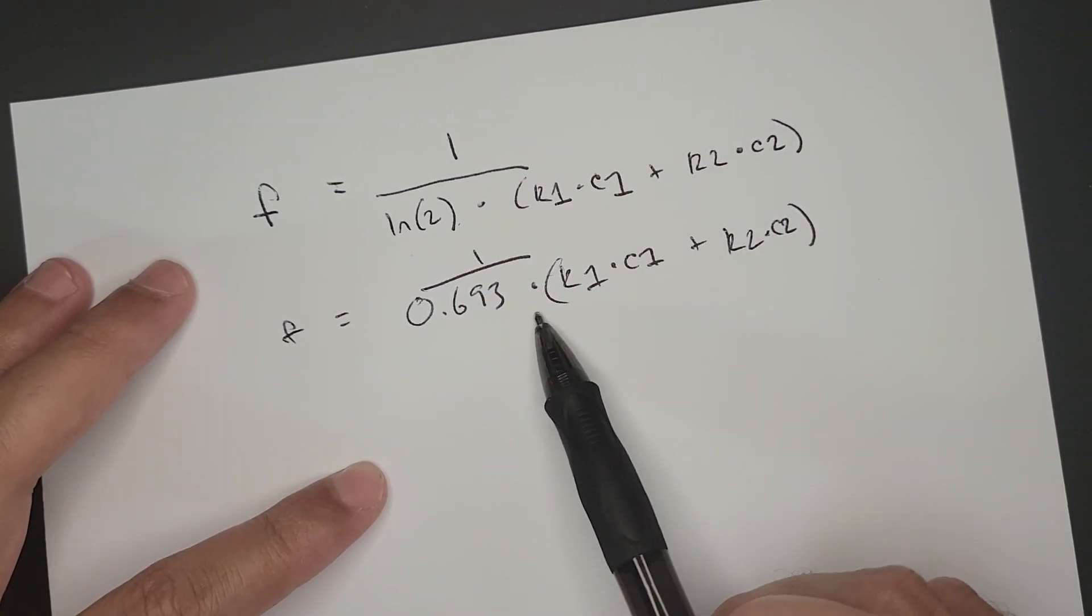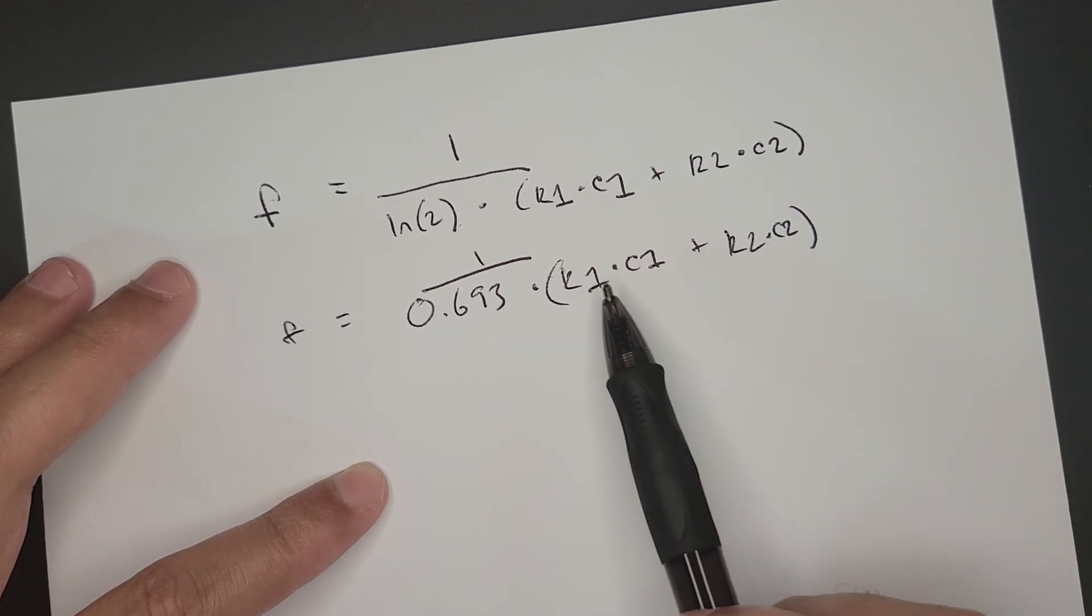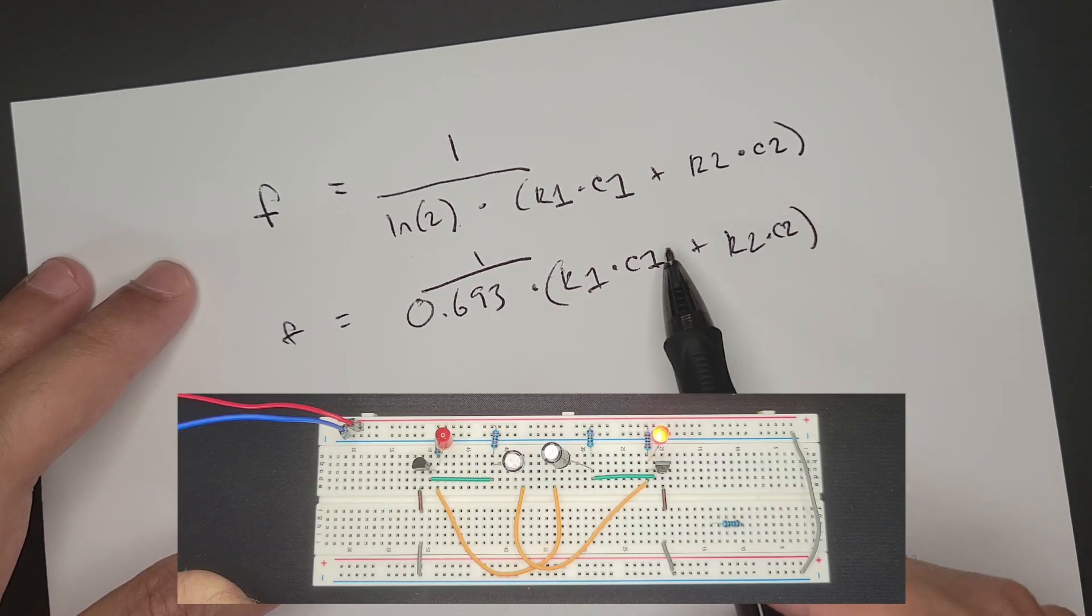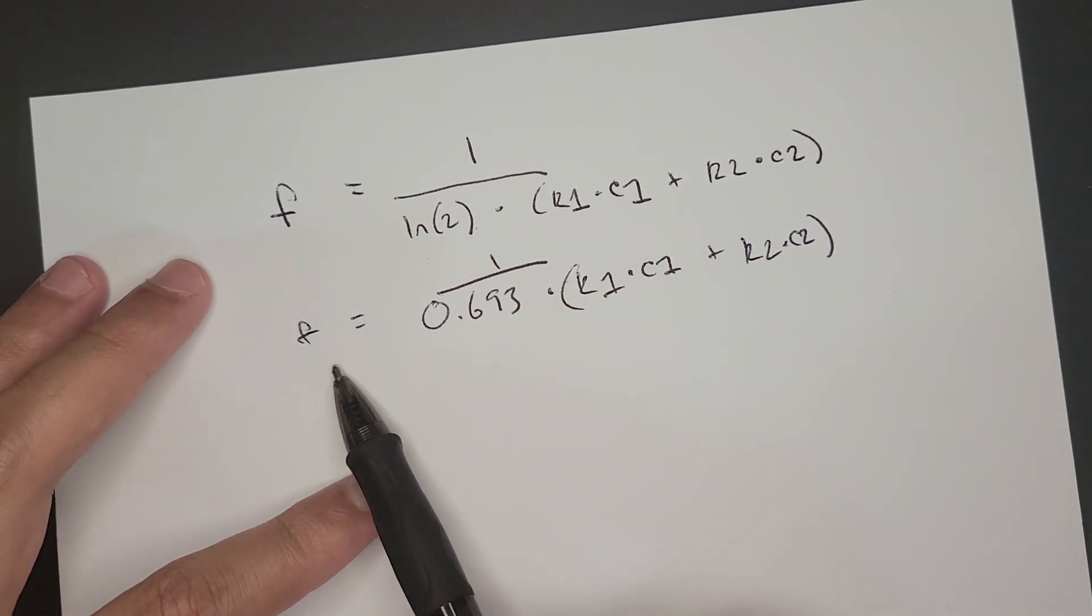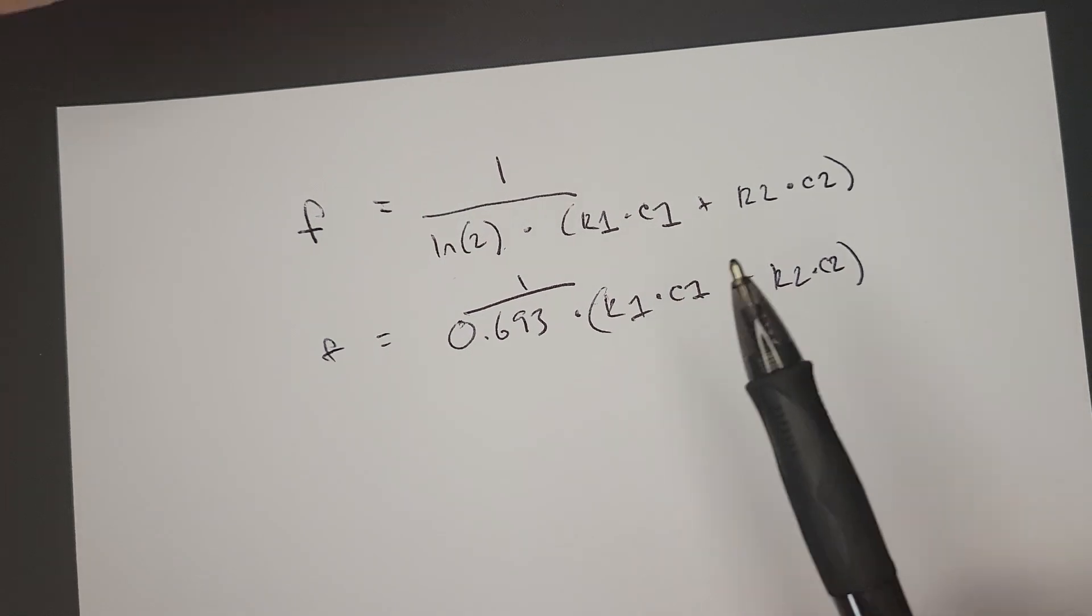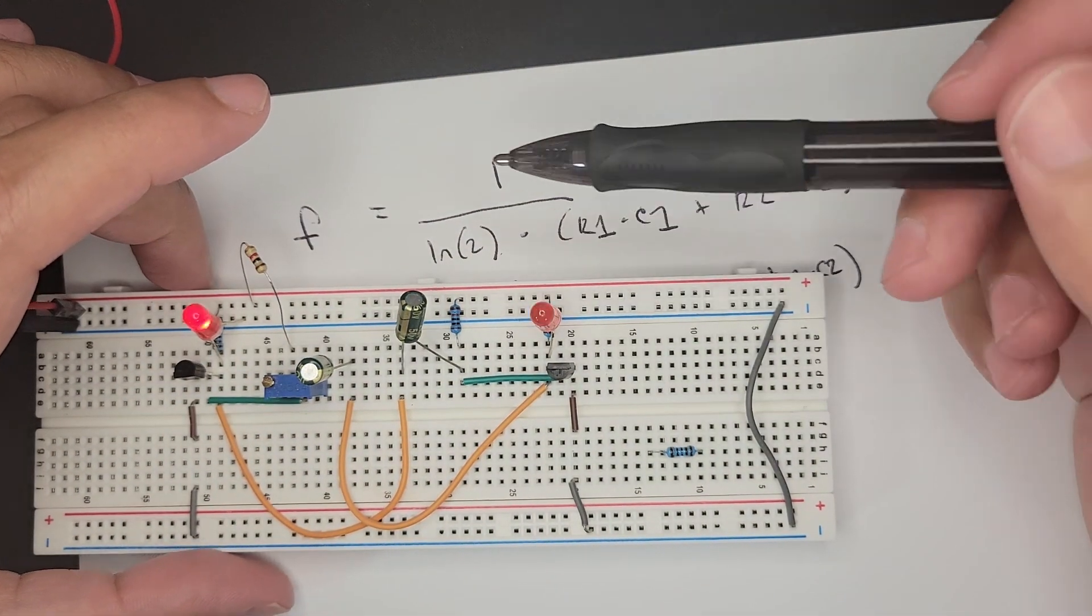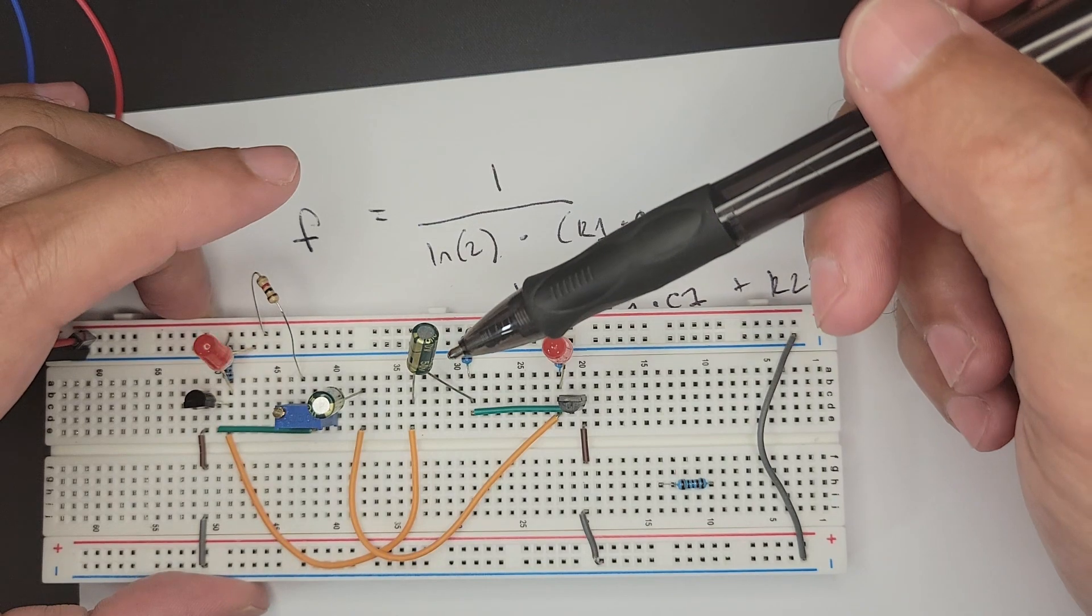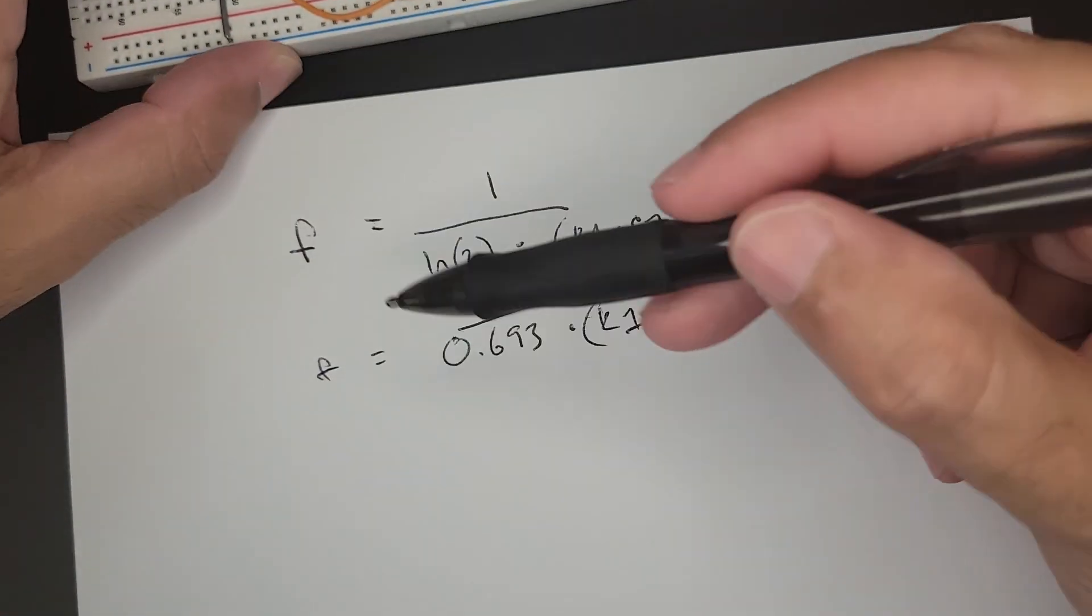Besides this weird logarithm thing, it's pretty simple. We just multiply these two together and multiply these two, add it up, multiply by this number, and it's divided by one. That's our hertz. For example, if we had our 10k here and a 22 microfarad capacitor, we should be able to work out the frequency.